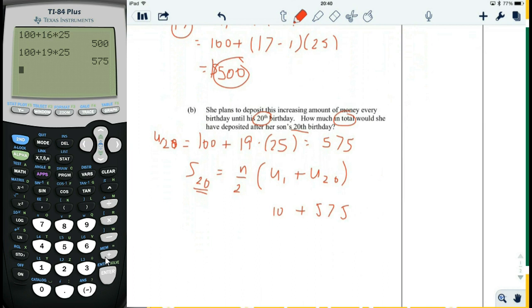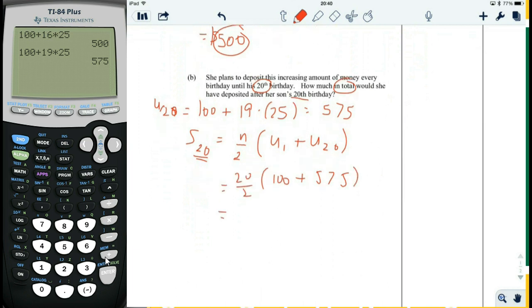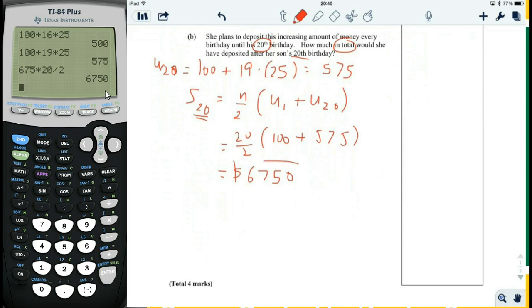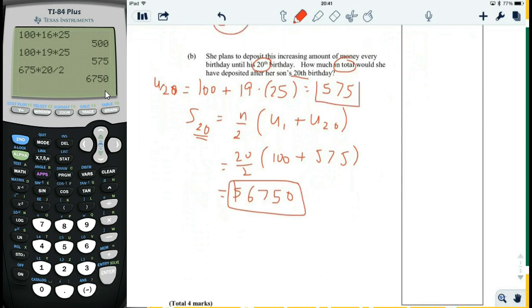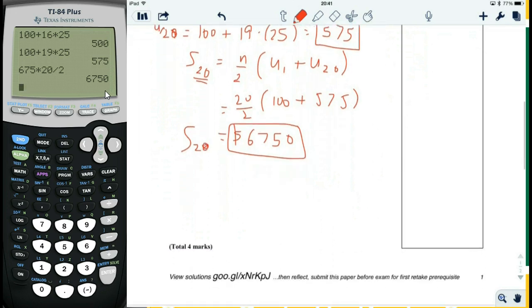U1 is 100 and n is 20, divided by 2. So this is equal to 100 plus 575 is 675, times 20, divided by 2. So that's how much he gets total. How much did he get for his 20th birthday? He got 575. How much does he get total from his first birthday to his 20th birthday? He gets $6750.